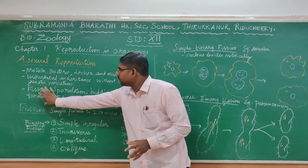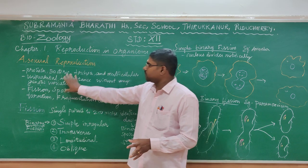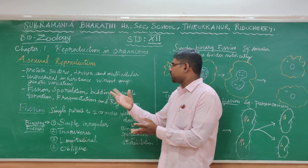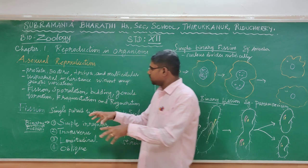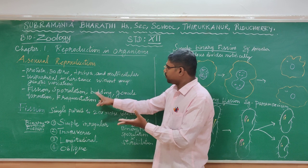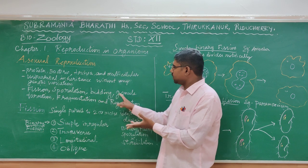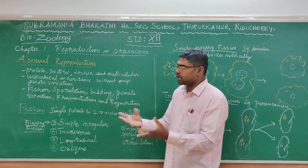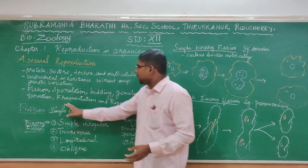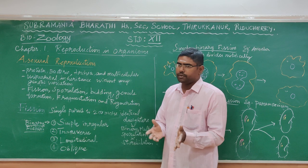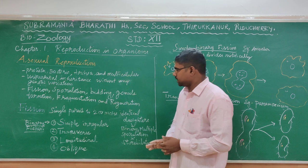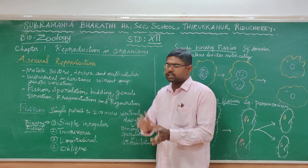So in this case, Asexual Reproduction has several types. Fission is division. Sporulation is spore formation. Budding is branch formation — it is exogenous. Gemmule is endogenous — some spores are produced inside the organism. Fragmentation and Regeneration are also types of Asexual Reproduction.